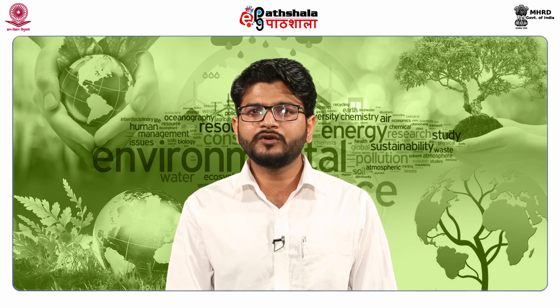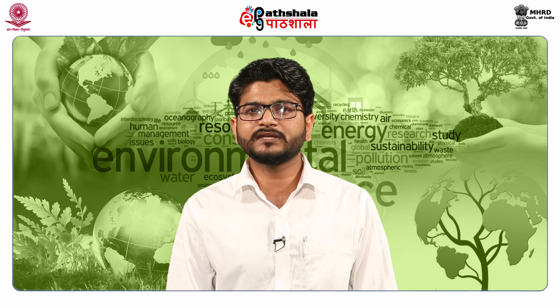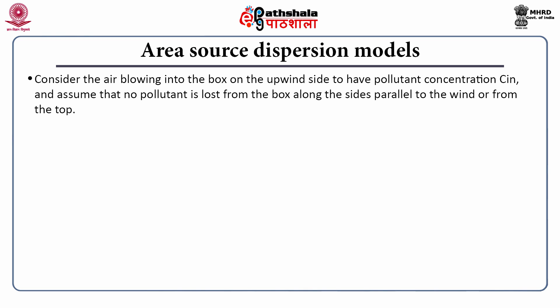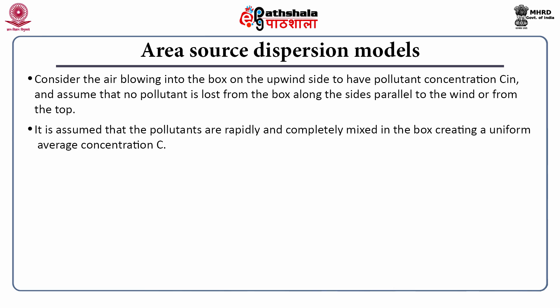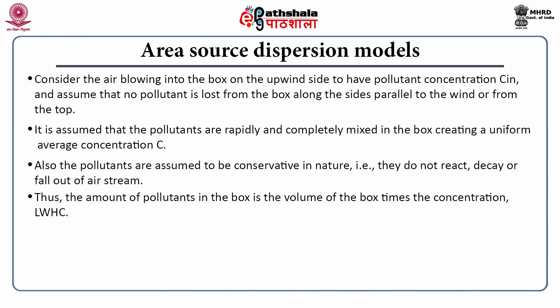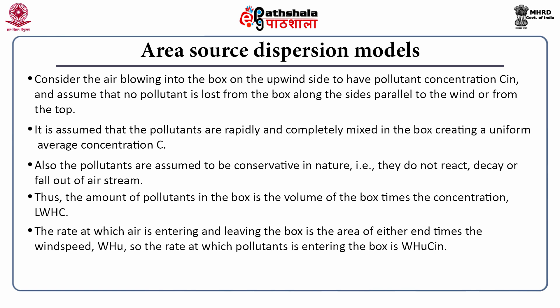Another approach involves estimating pollutant concentration over an area such as a city by using the box model concept. Consider the air shed over an urban area to be represented by a rectangular box with base dimensions L and W and height H. The box is oriented such that wind speed U is normal to one side of the box. The height of the box is determined by mixing depth, and emission per unit area is represented by Q_S. Consider the air blowing into the box on the upwind side to have pollutant concentration C_in. It is assumed that the pollutants are rapidly and completely mixed in the box, creating a uniform average concentration C. The pollutants are assumed to be conservative in nature. Thus, the amount of pollutant in the box is the volume of the box times the concentration, represented by L·W·H·C.